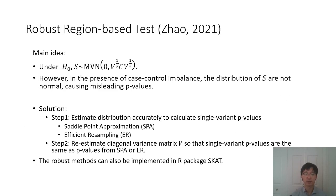This is the intuition behind our robust region-based test. The main idea is simple. Under the null, which means beta equals zero, we assume S follows a multivariate normal distribution. However, when the case-control ratio is unbalanced, the distribution of S is not normal, which can cause misleading p-values.